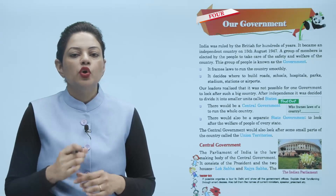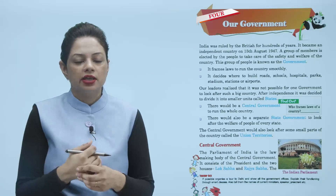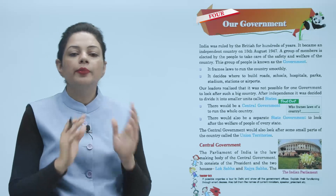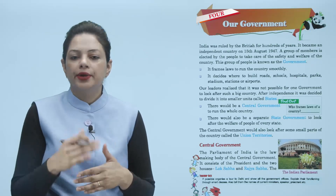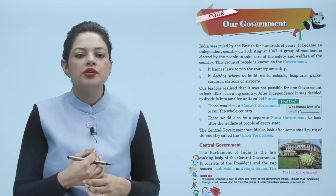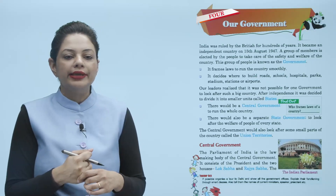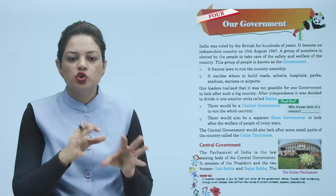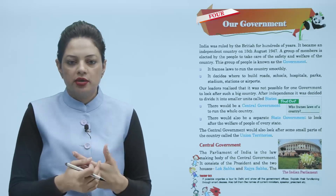Our leaders realized that it was not possible for one government to look after such a big country. तो उन्होंने सोचा क्यों न हम government के parts बना दें। After independence, it was decided to divide it into smaller units called states. Leaders ने decide किया क्यों न हम इंडिया को अलग-अलग states में divide कर दें और छोटे-छोटे leaders choose कर दें, ताकि आसानी से run हो सके हमारी country।